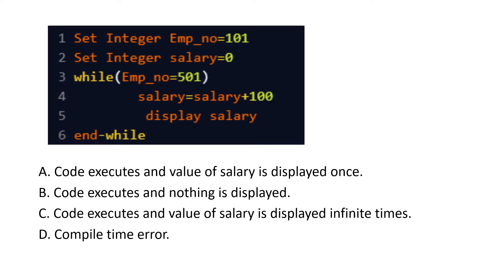Here comes our very first pseudo-code question. Give it a read — this is the first question and a basic while loop is used. We need to find the expected output. Initially, an integer employee number is declared, and another integer salary is set to zero. Two integers are declared with values 101 for employee number and 0 for salary.